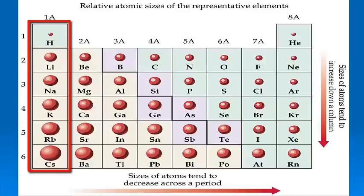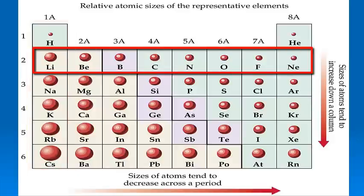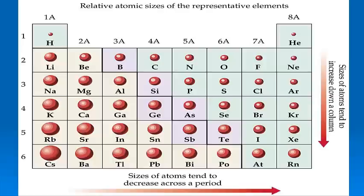the atoms get bigger. But look what happens if you go across a period. Look at lithium to beryllium to boron, carbon, nitrogen, oxygen, fluorine, and neon. The atoms are getting smaller. So the general trend around the periodic table is that as you go down a group, atoms get bigger. As you go from left to right across a period, atoms get smaller.